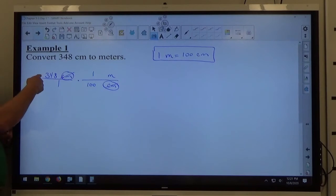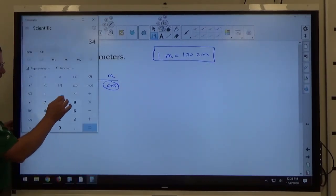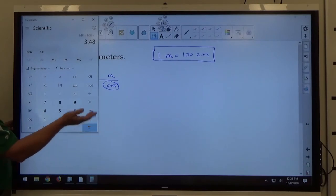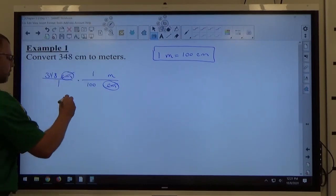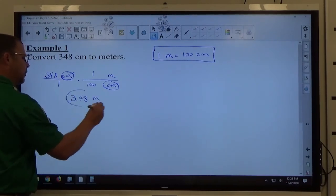In this case, 348 is on top, 100 is on the bottom, so I would divide. 348 divided by 100 is 3.48. Again, just moving the decimal point two spaces to the left, but this guarantees you went the right direction.